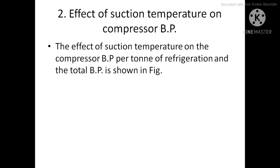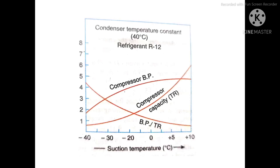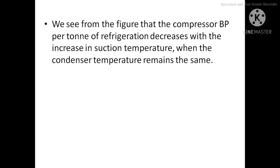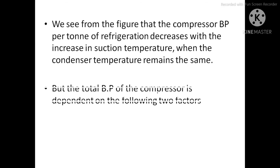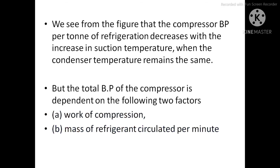The effect of suction temperature on compressor brake power per ton of refrigeration and total brake power is also shown in the figure. With an increase in suction temperature, the brake power per ton decreases. The total brake power of the compressor depends on two factors: the work of compression, and the mass of refrigerant circulated per minute.